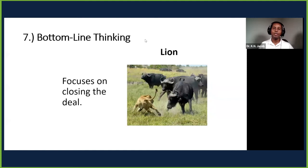Number seven: bottom line thinking, using the lion. Bottom line thinkers focus on closing the deal. They go for targets that are very huge, larger than them. They are focused on what is on the table, what's in it for me. They focus on the profits, not the income—the net effect, how the cash flow looks like.